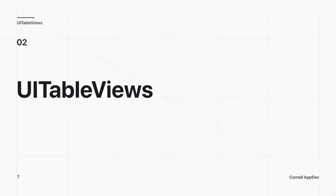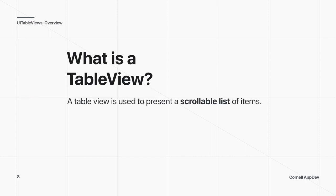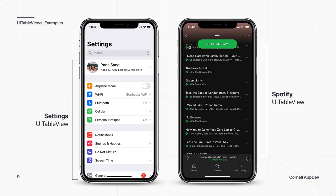Moving on to the topic for today, which is UITableViews. A table view is used when you want to present a scrollable list of items on your screen — like a generic table you'd make in a Word document, except you can scroll to see multiple items. Some examples of UITableViews you've probably seen are the Settings screen, which is a UITableView with multiple sections, and music apps like Spotify where playlists or songs appear in a table view.